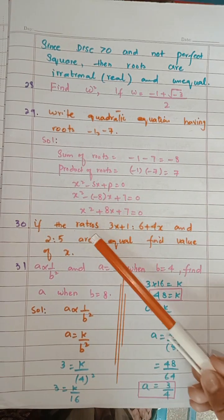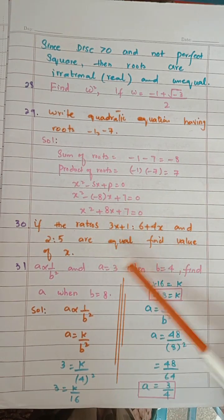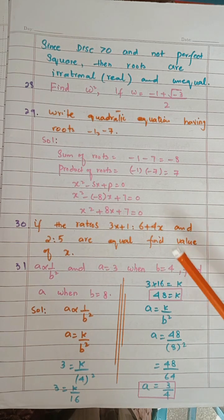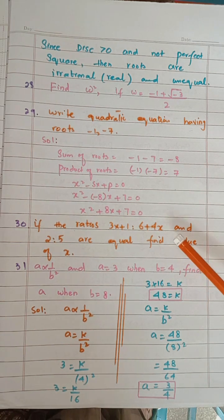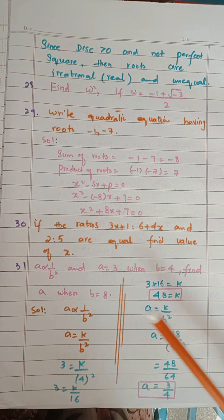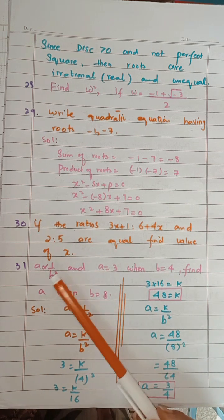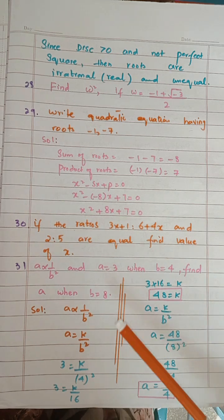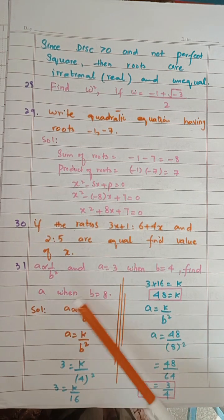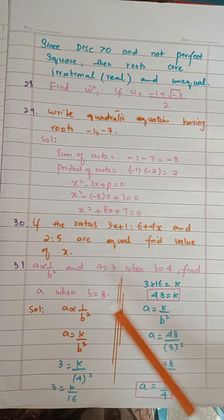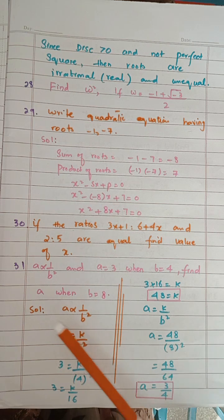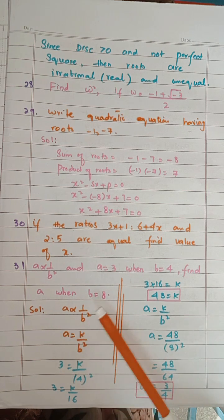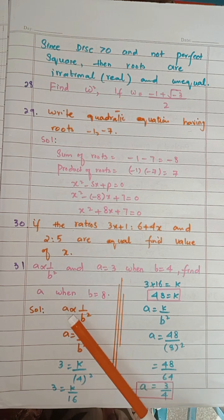Next, if the ratios of these are equal, find x. This is the same question from group 1. Now, if A is proportional to B squared, I will not read the question again — read and solve it one by one. In the question, A is proportional to B squared, which means the proportional sign will be removed, giving A equals K by B squared.